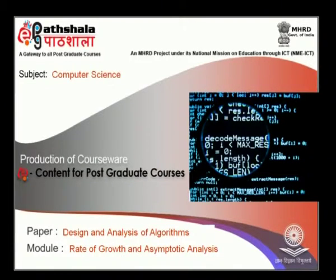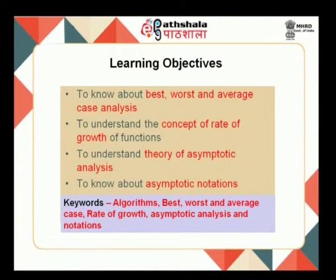In this module we are going to discuss about different scenarios like best case, worst case, and average case scenario of algorithm analysis. Then we are going to discuss about the important concept of rate of growth. Using this concept we are going to compare various algorithms suitable for a given problem, and discuss asymptotic analysis and various asymptotic notations. Using these notations we are going to convey the complexity of the algorithm analysis to the programmer so that he can have an idea about the efficiency of an algorithm.